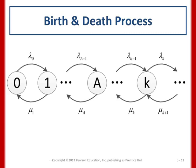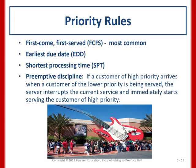For modeling queuing and waiting lines, we apply the birth and death process. Lambda (λ) is the arrival rate — influenced by the number of people arriving — and mu (μ) is the service rate, depending on the speed of the servers.